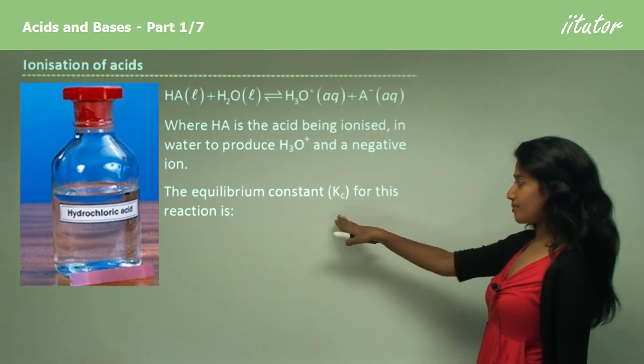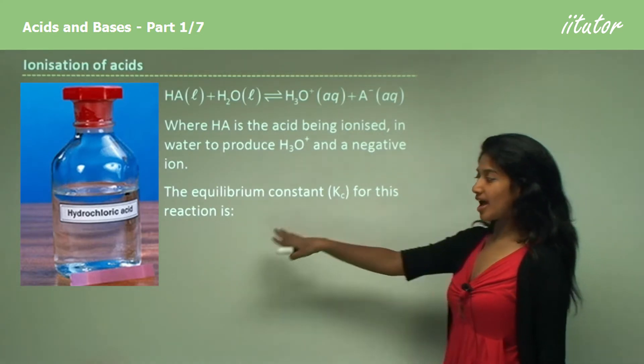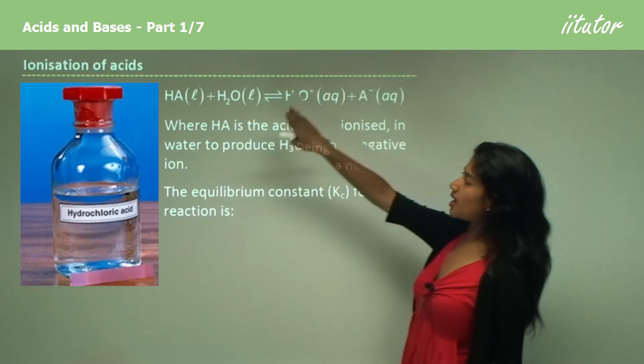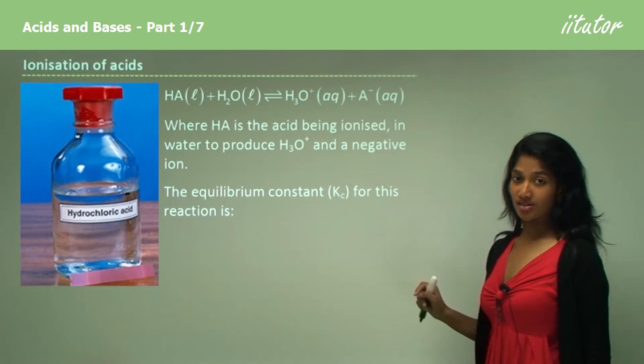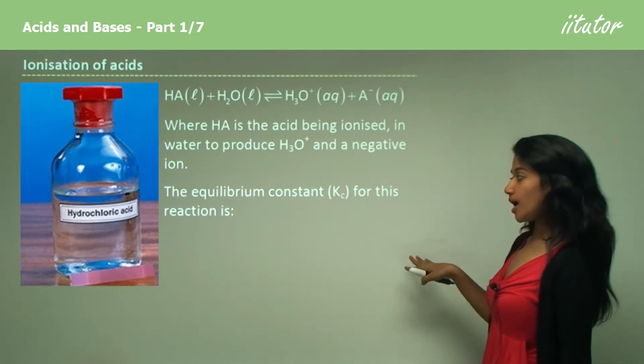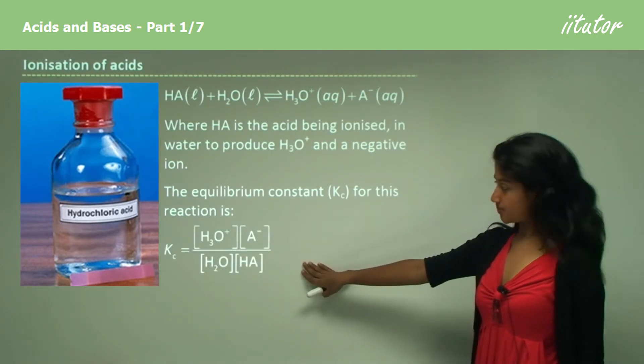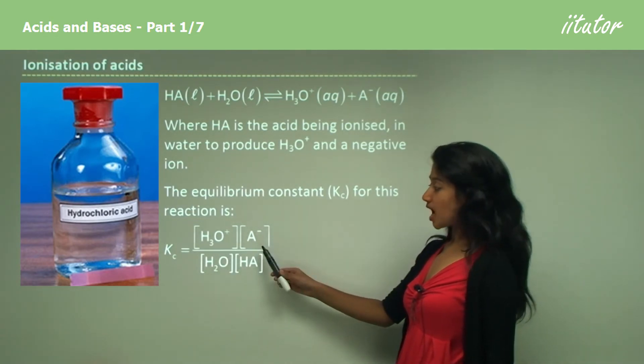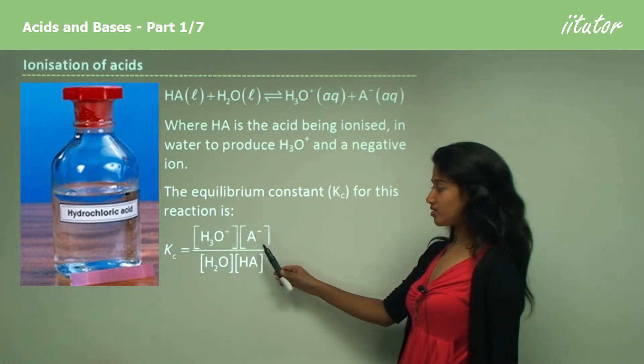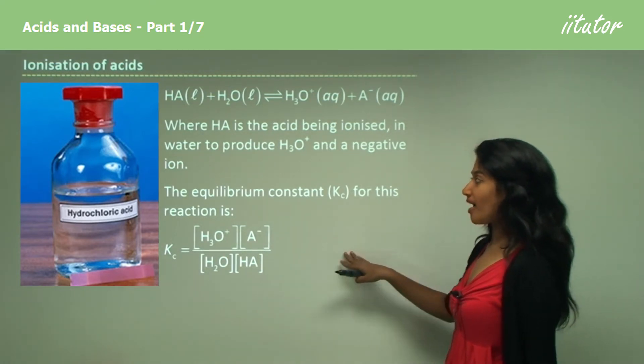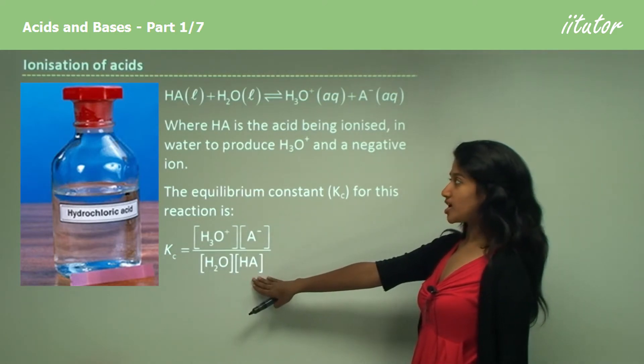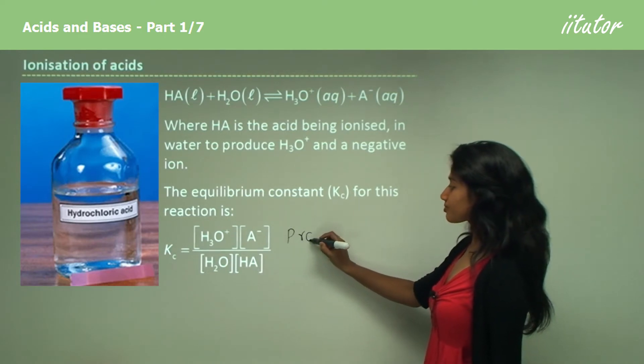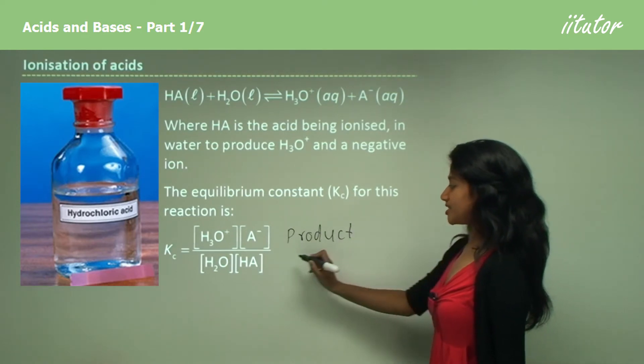The equilibrium constant Kc for this reaction is worked out by seeing the relationship between the products and reactants. For this example, the expression would be the concentration of hydronium ions times the concentration of A- ions, divided by the concentration of water and the concentration of HA. These are the products and these are the reactants.